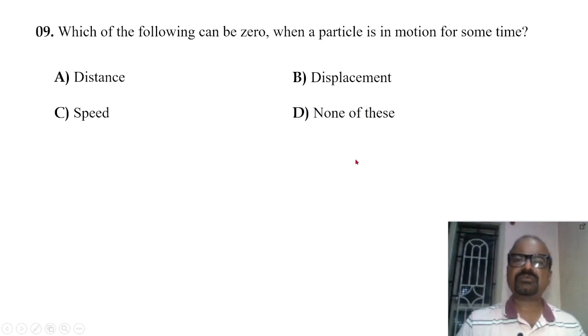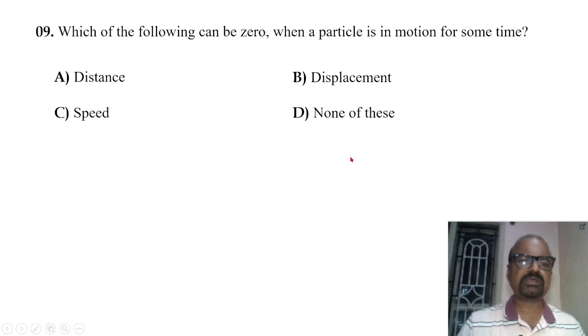Which of the following can be zero when the particle is in motion for some time? A particle moves in a direction covering some distance. What quantity can be zero?